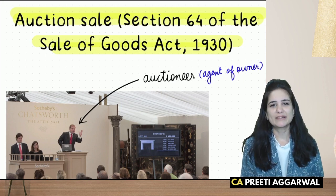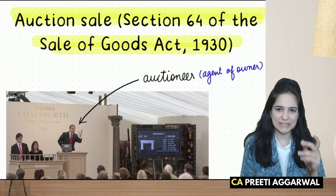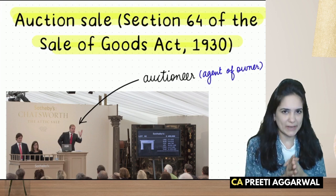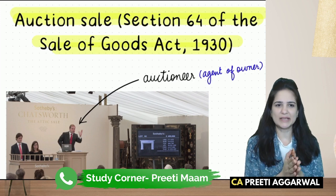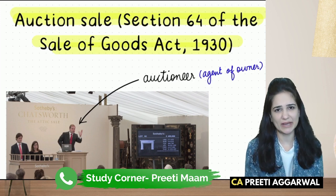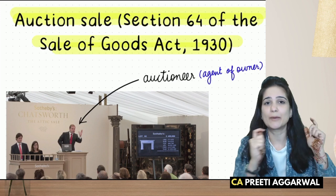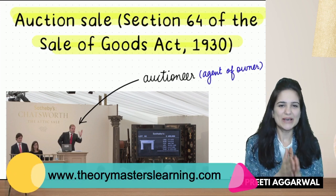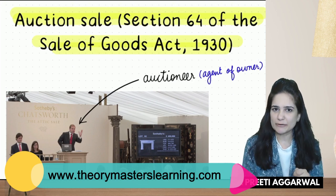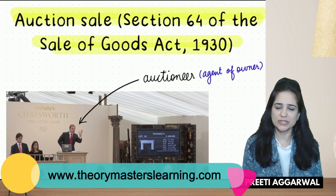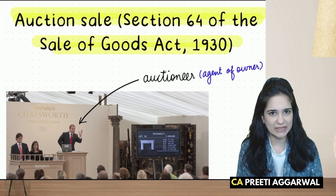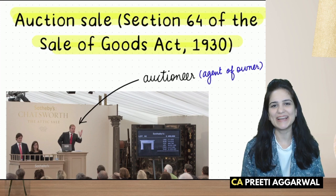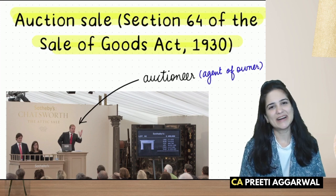Today's topic is the Auction Sale — Section 64 of the Sale of Goods Act 1930. Students from my WhatsApp group had requested that we discuss auction sale rules step-by-step with examples. So here I am discussing the rules of auction sale. It's an important part for the exam — it can be case-based questions and theory questions. Let us discuss what is the meaning of an auction sale and what are the rules regarding it.